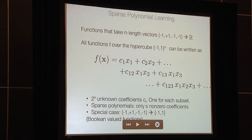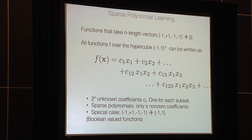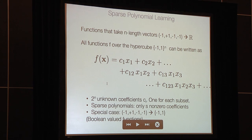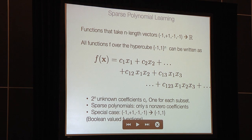There is one unknown coefficient — sometimes called a Fourier coefficient — for each subset of variables, so there are 2^n unknown coefficients. We'll be interested in sparse polynomials, where only s of them are non-zero. A special case is when the output is also in {-1, +1}; these are called boolean-valued functions, the objects studied in classical learning theory.